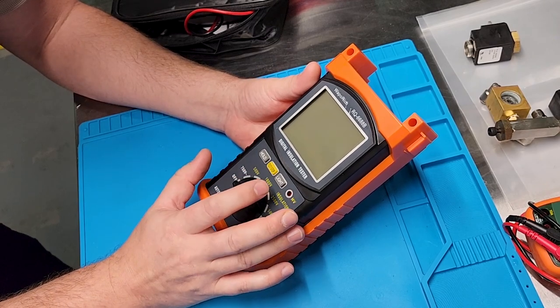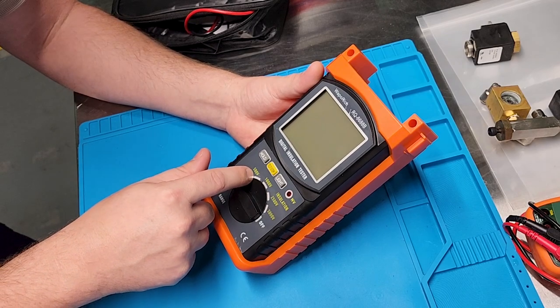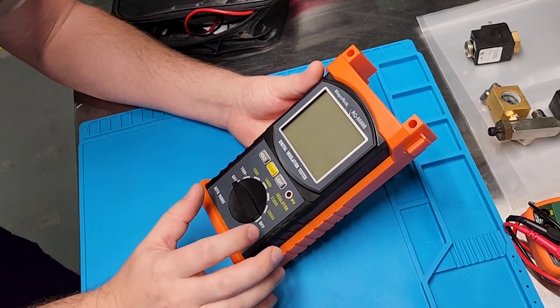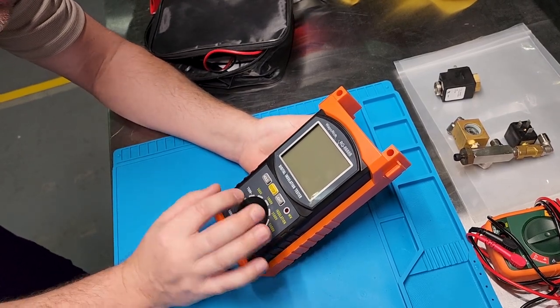Buttons are Hold, Test, Stop, and Light. And then you've got a selector dial for Off, 750 volts, 500, 1000, 2500, or 5000 volts.